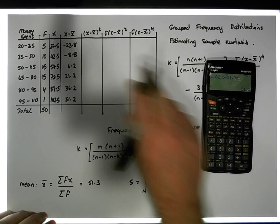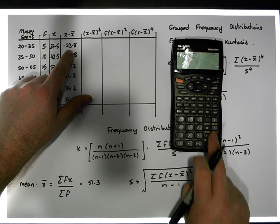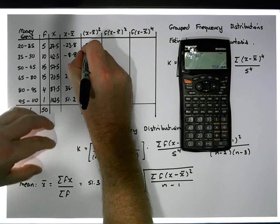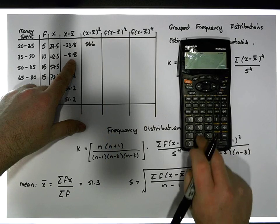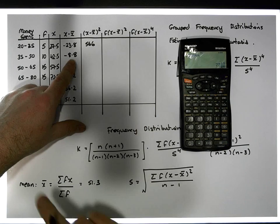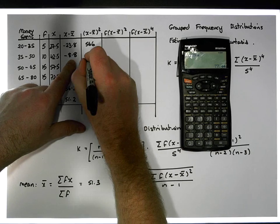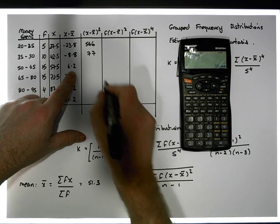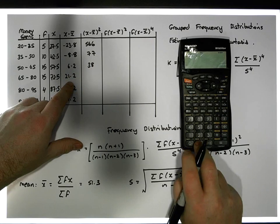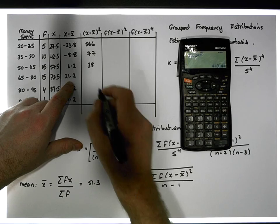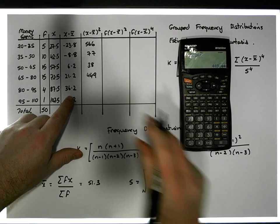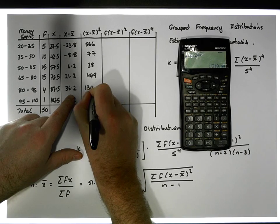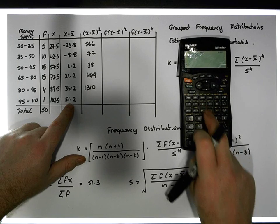Now that we have all our deviation values, we square them. 23.8 squared — rounding to whole numbers — gives us 566. 8.8 squared (negative times negative gives positive) is approximately 77. 6.2 squared gives approximately 38. 21.2 squared gives approximately 449. 46.2 squared gives 1310.